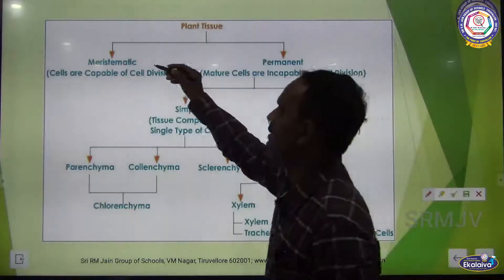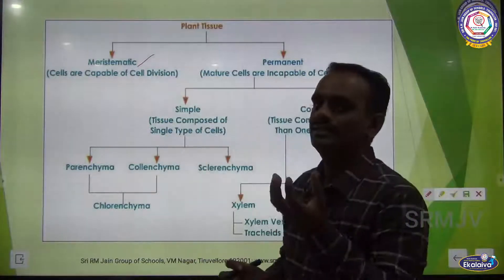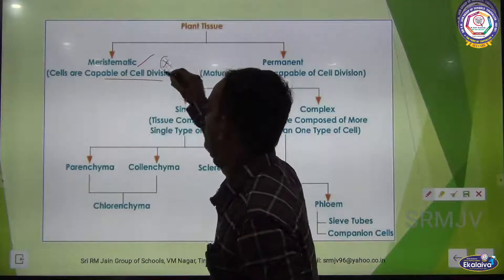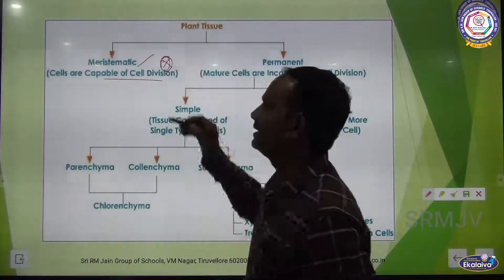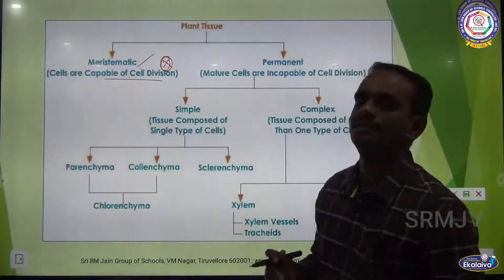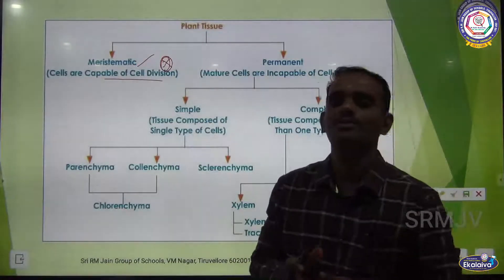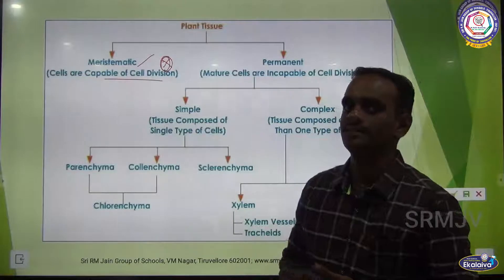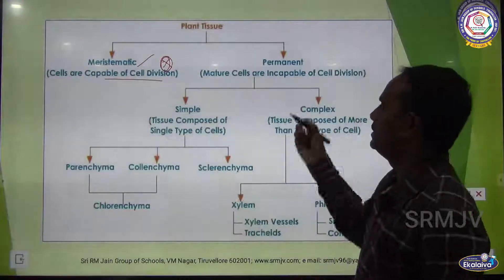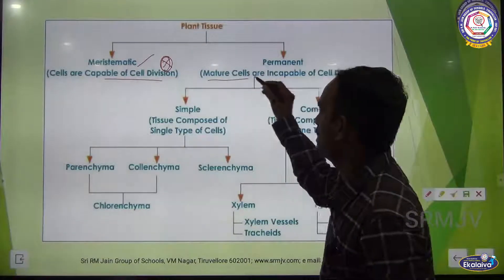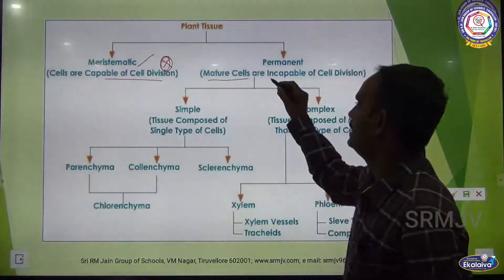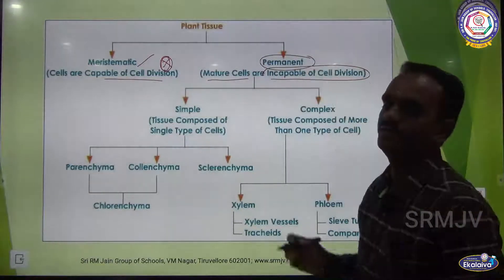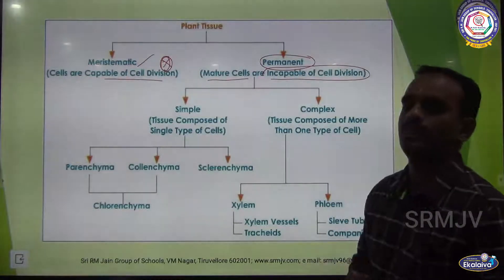What is meristematic tissue? The cells are capable of cell division — all the cells of the meristematic tissue undergo cell division, that is called meristematic tissue. What is permanent tissue? They are the mature cells incapable of cell division; they cannot undergo any cell division, that is called permanent tissue.